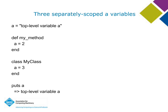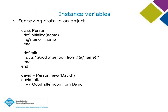Instance variables, which we saw already — when I initialize the Person object, I send in a string for the name courtesy of the method parameter, and stash that string in the instance variable `@name`, so that later I can retrieve it in the `talk` method and say 'good afternoon from' and print the name. Instance variables are slots for maintaining state per object.